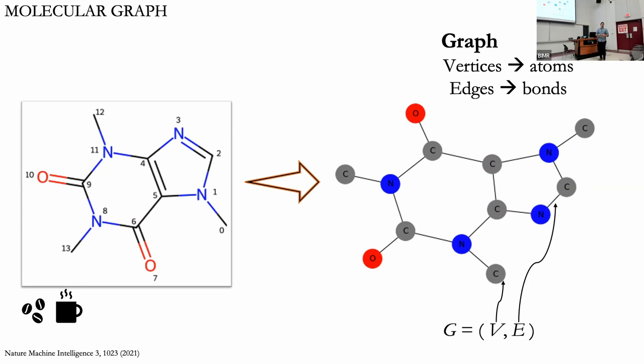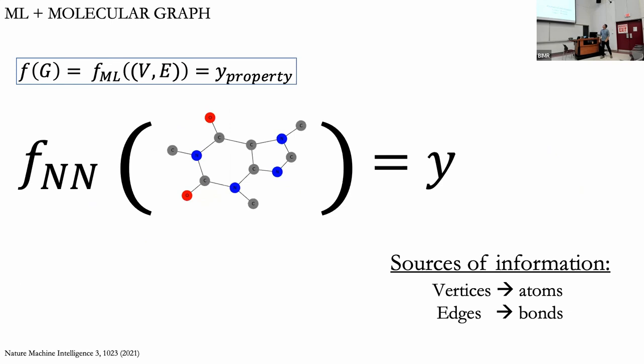So why don't we use this to our advantage? A graph is mathematically defined by two components: vertices — which in this case are atoms — and edges, which are bonds, what we believe drives the interaction in our molecule. The idea is: I have a molecule and all I know is how the atoms are connected. I put it into a regression model and I get the property. The only two sources of information I give these machine learning models are my atoms and my bonds.